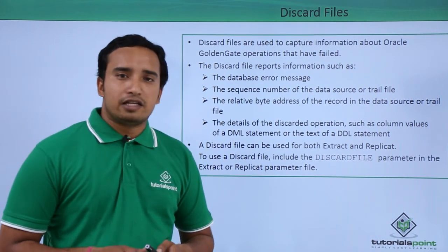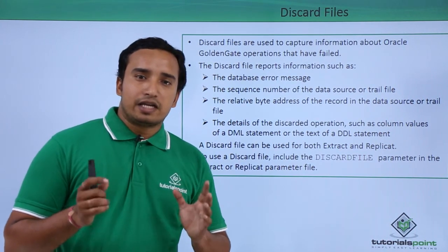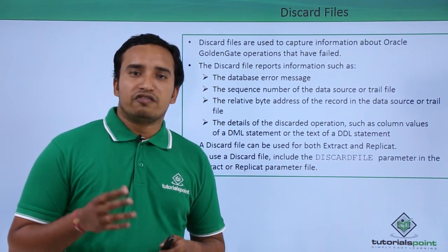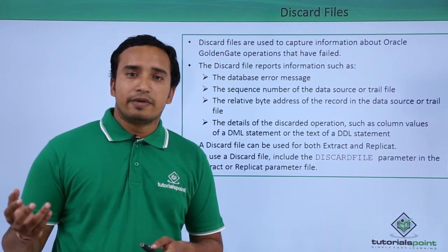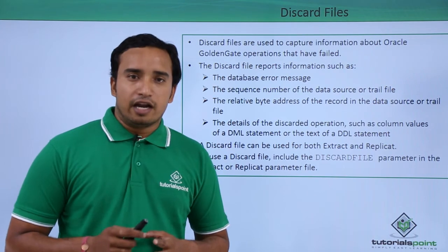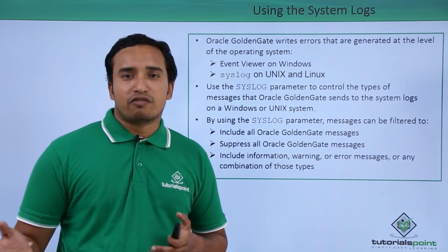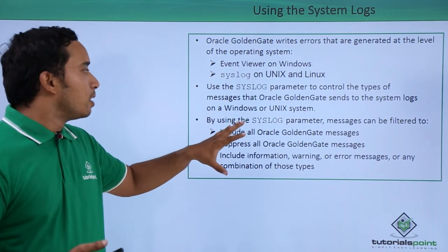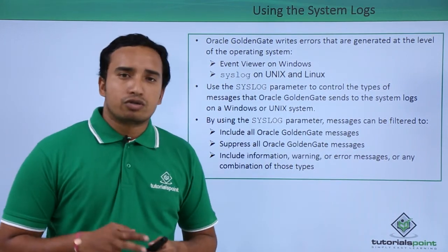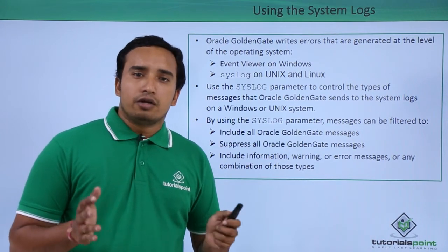The discard file is an important file in the GoldenGate process. It records and captures all records that were discarded by the Replicat. You can view this discard file to know if any data did not get replicated to the target database and understand the reason why. Regarding system logs, there is a syslog for Windows and for Linux machines that captures all operating system messages. You can configure GoldenGate to send errors to this syslog, or stop it from doing so.